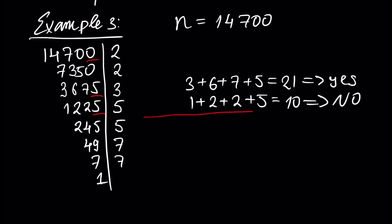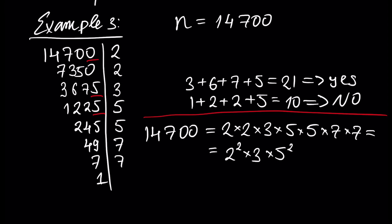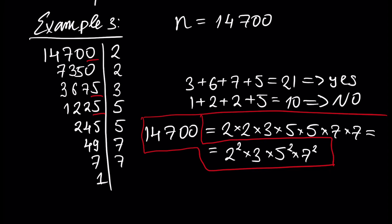As a result, our number 14,700 can be represented as 2 × 2 × 3 × 5 × 5 × 7 × 7, or in shorter form: 2² × 3 × 5² × 7². This is the prime number factorization of 14,700.